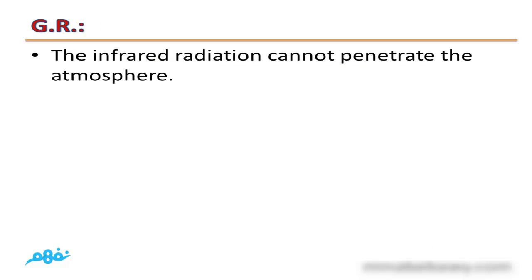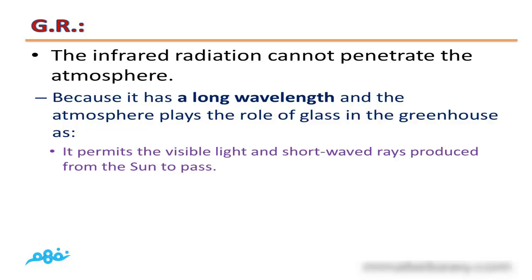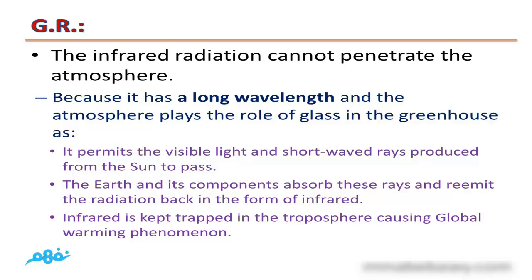Infrared radiation cannot penetrate the atmosphere because it has a long wavelength. The atmosphere plays the role of glass in a greenhouse, permitting only visible light and short-wave rays from the sun to pass through. The Earth and its components absorb these rays and re-emit the radiation back in the form of infrared, which remains trapped in the troposphere, causing global warming.